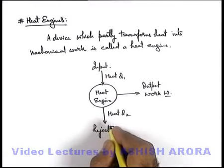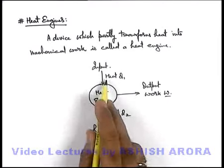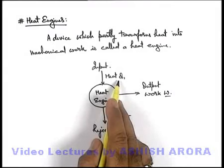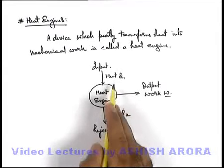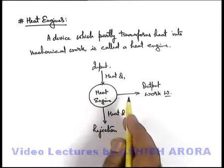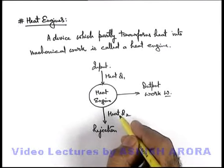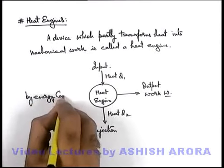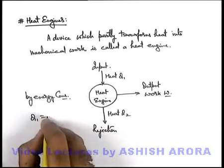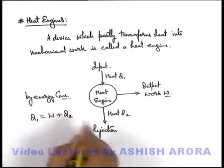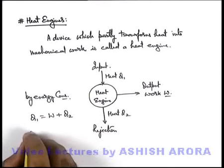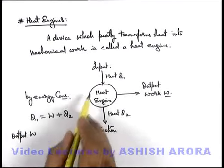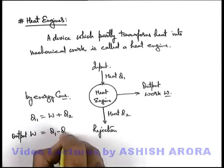As we have studied in the second law of thermodynamics, hundred percent transformation of heat to work is not possible. That means work will always be a fraction of the supplied input heat, and the remaining amount of heat will always be rejected by the heat engine before completing the cycle. By energy conservation, Q1 is the supplied heat, part of it is transformed into work, and the remaining amount is rejected as Q2. So the output work done by the heat engine in its cycle can be written as Q1 minus Q2 — always remember it.